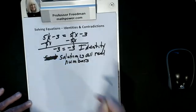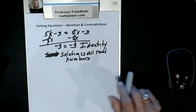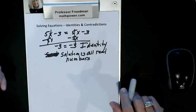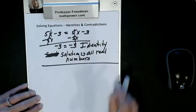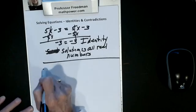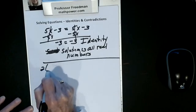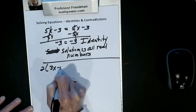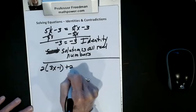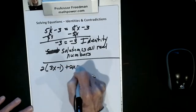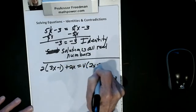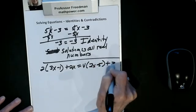So when I have something equaling itself, I have an identity, and the solution is all real numbers. Now let's look at another example: 2 times the quantity 3x minus 1, plus 2x, equals 4 times the quantity 2x minus 5, plus 3.